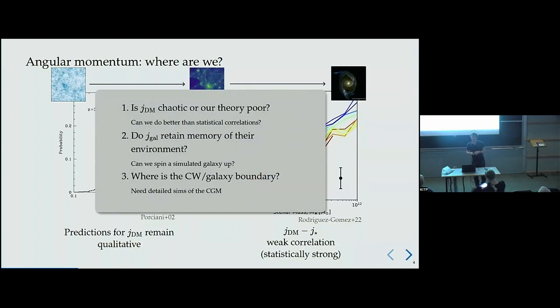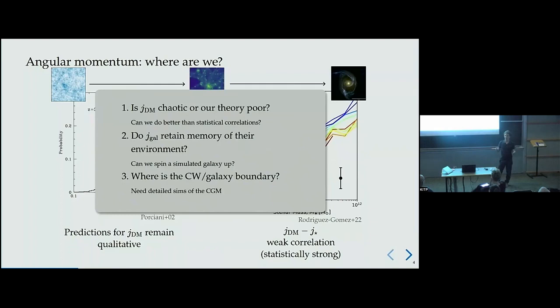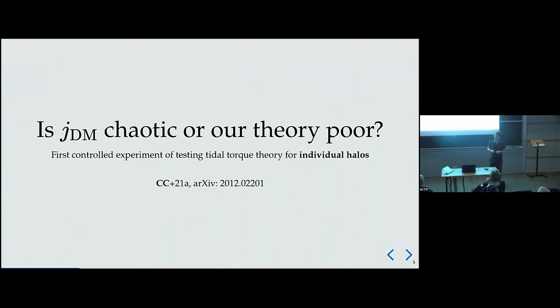This brings me to the two-plus-one questions I want to address today. First, is dark matter angular momentum chaotic, or is it just that our theory is poor? Is it a fundamental limitation of physics or a theory problem? If you want to sleep for a couple of minutes: the answer is our theory is poor. Let me explain why.